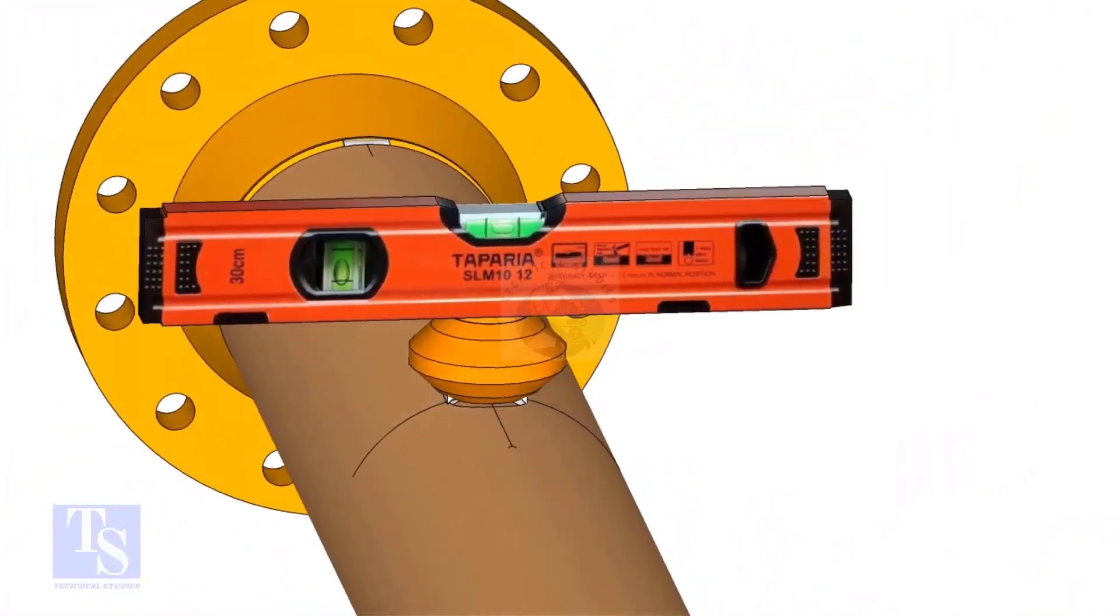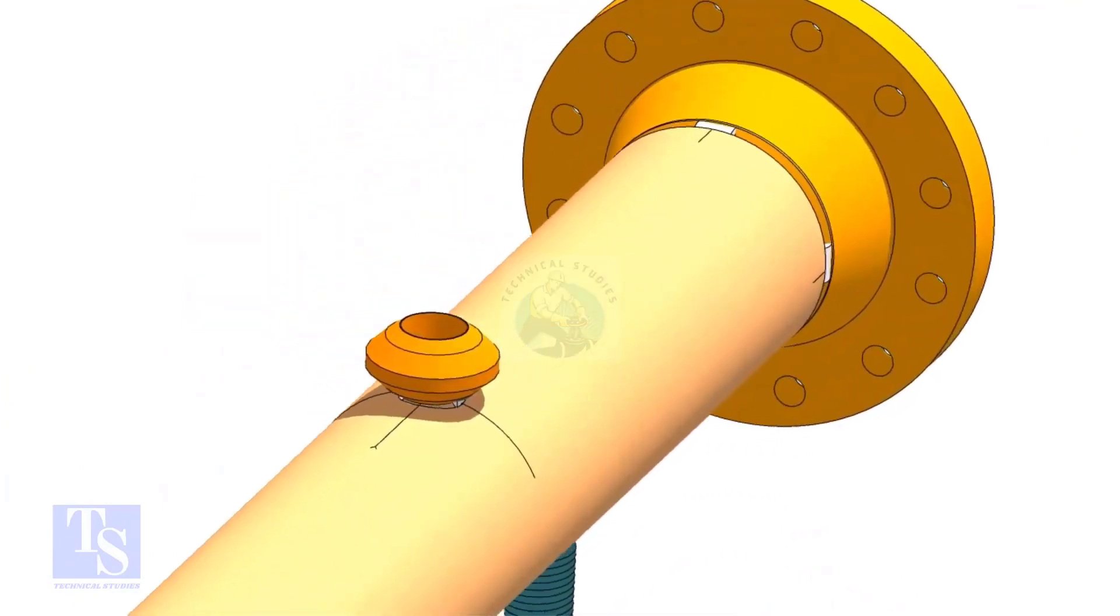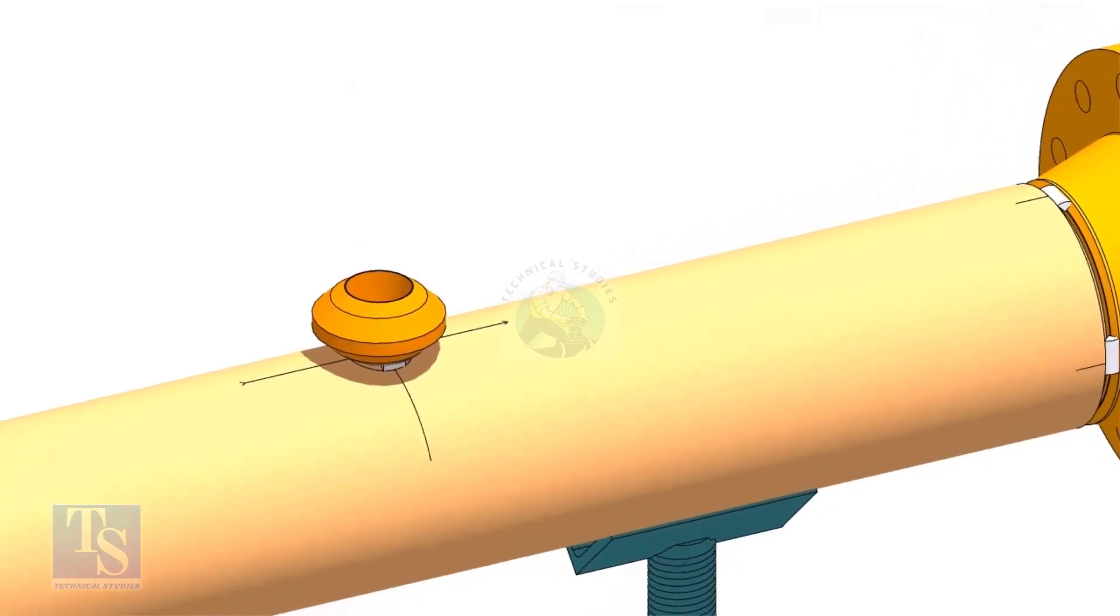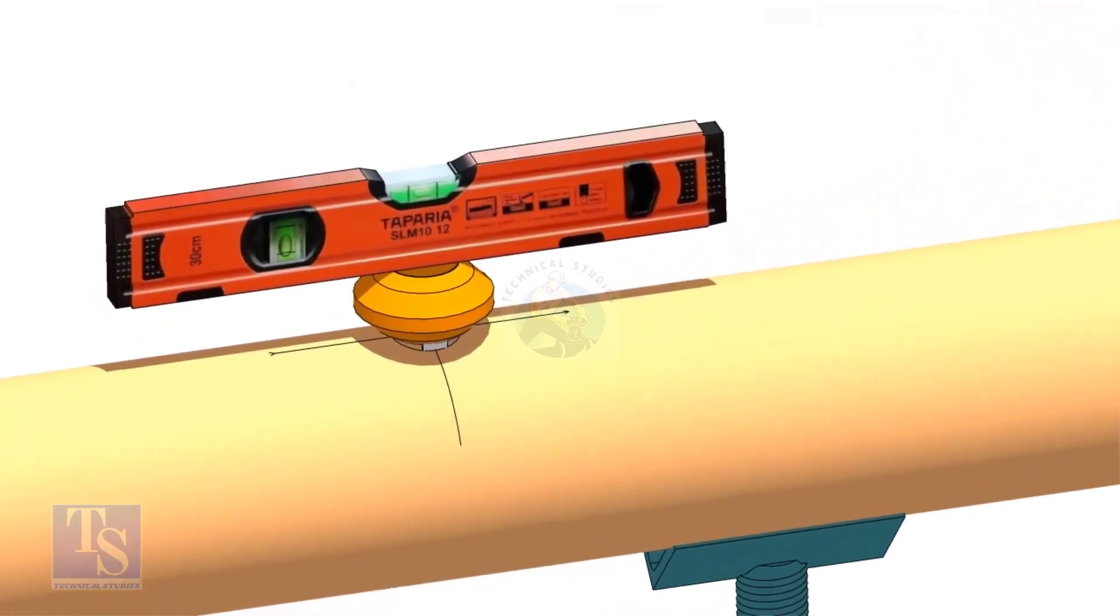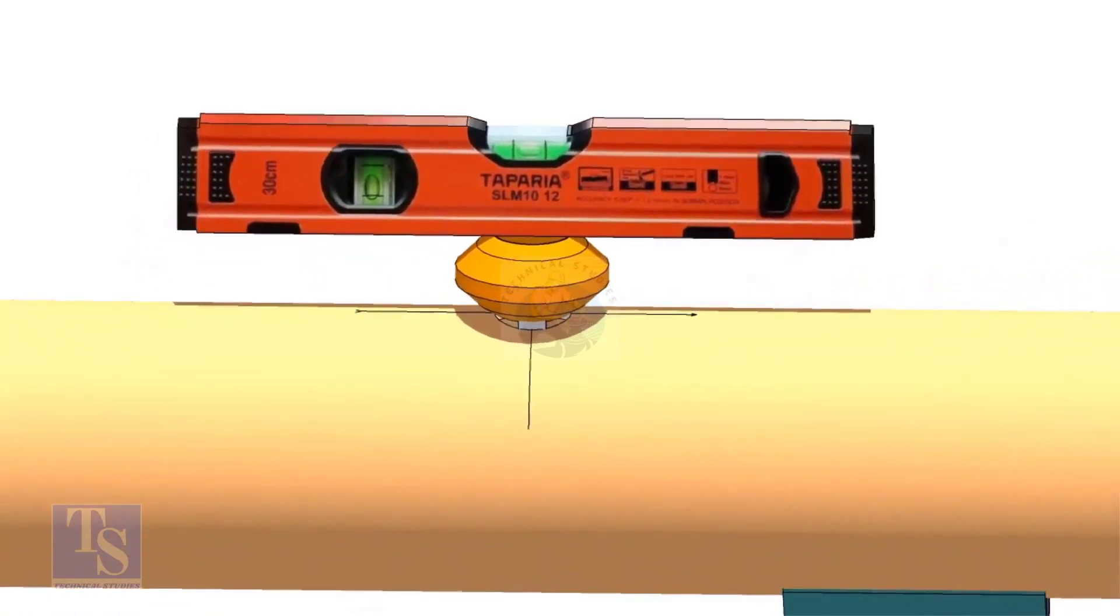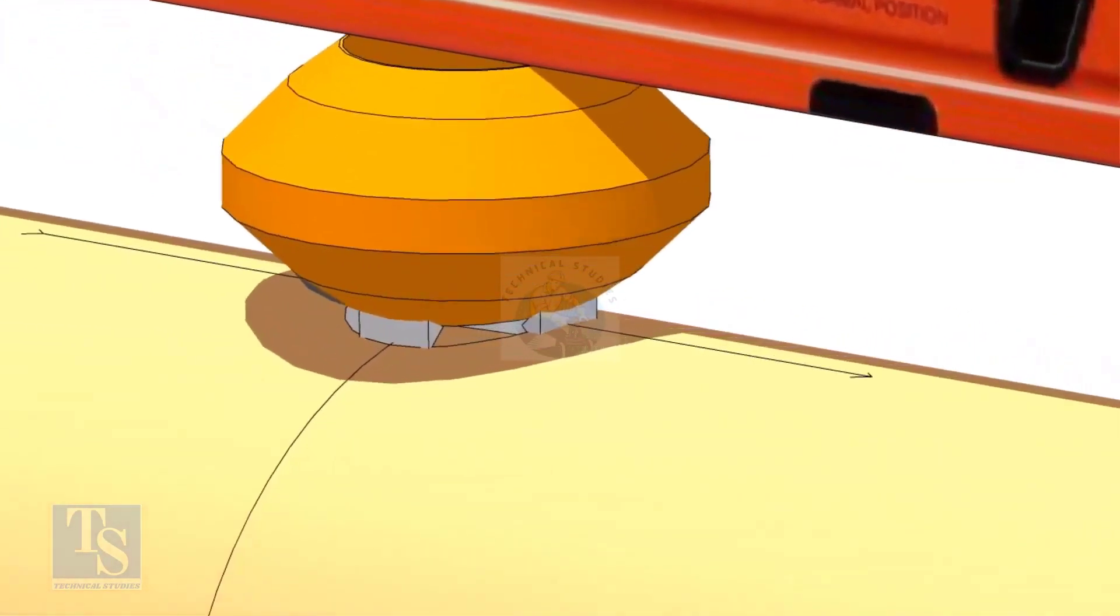If the level is correct on both ways, tack weld on the longitudinal side.